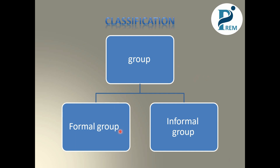There are two types: Formal Group and Informal Group. Formal, like I said, is an organization or a team — that is the Formal Group. Informal includes random friends, relatives, or family and friends — that is the Informal Group.